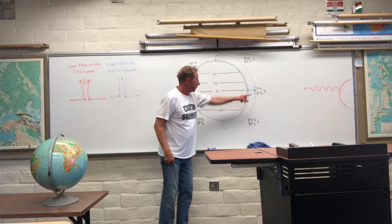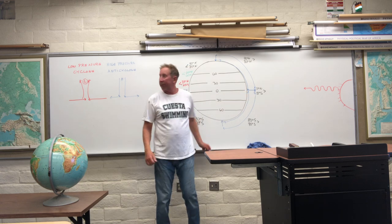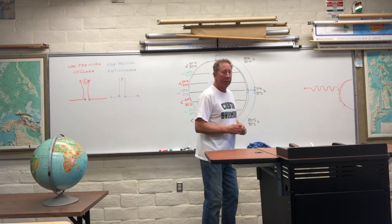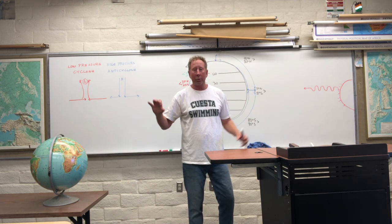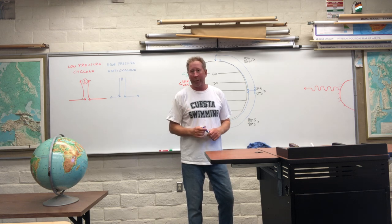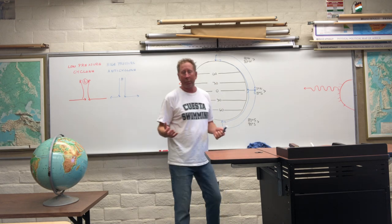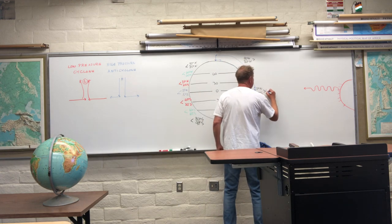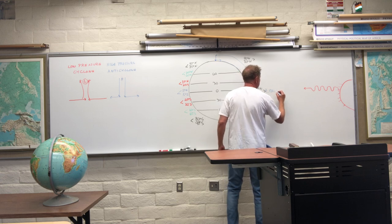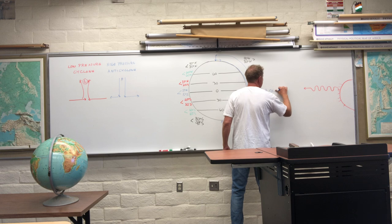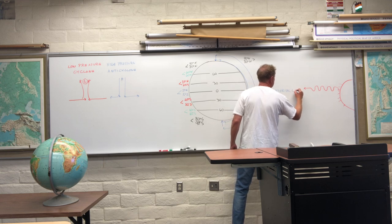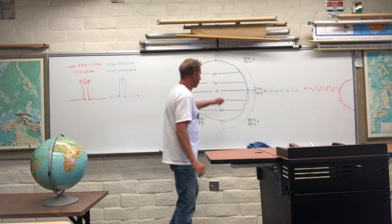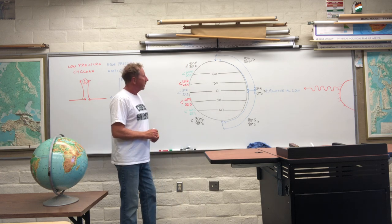At the equator, the air is converging and it's rising — that is low pressure. So near the equator, we have a belt of low pressure called the equatorial low. It rains a lot near the equator. I've been to the Amazon jungle and it rained every day about 2 o'clock in the afternoon. Indonesia has 300 thunderstorms a year in many parts of their country. So let's put the pressure belt down — this is called the equatorial low, a belt of low pressure all the way along the equator.